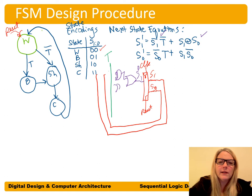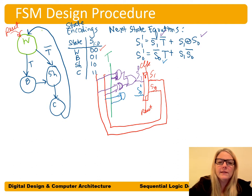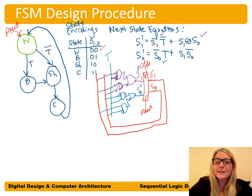Drawing out the gate shapes: we have an AND gate for S1_bar and T_bar (with bubbles on inputs), OR'd with an XOR gate for S1 XOR S0. For S0 prime (next state bit 0), we implement S0_bar AND T, OR'd with S1 AND S0_bar. And here is our finite state machine in circuit form.